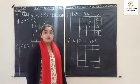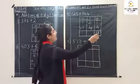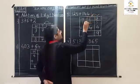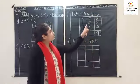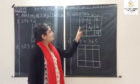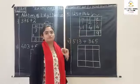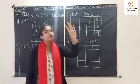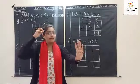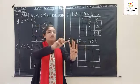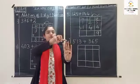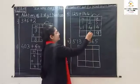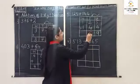Now come to tens place. After completing units place, come to tens place. Two plus four — keep two in mind, remove four fingers. After two: three, four, five and six. So the answer is six.